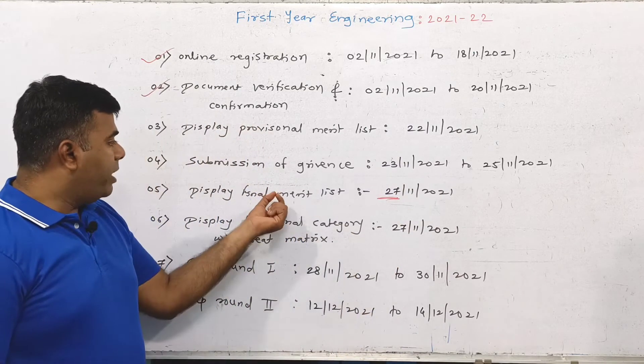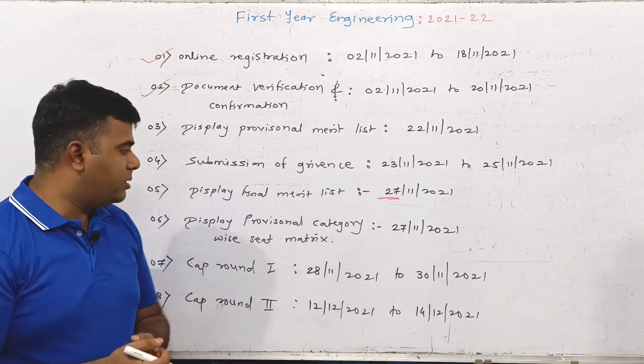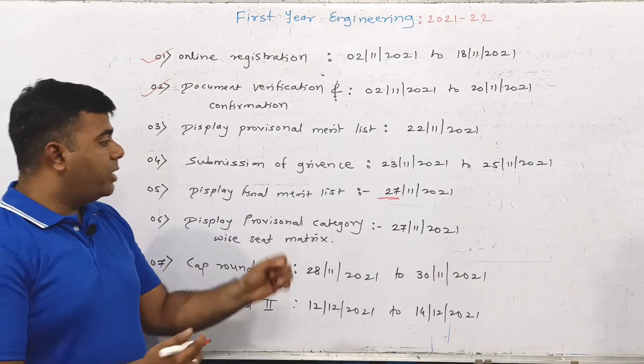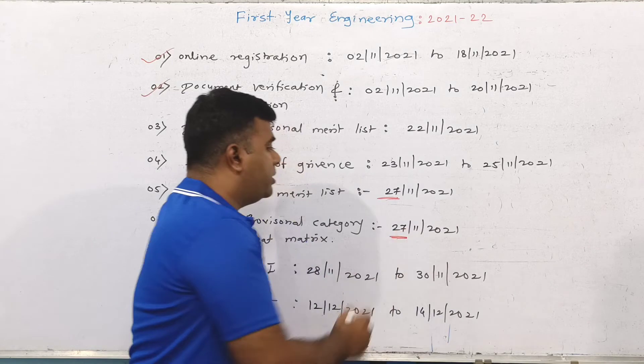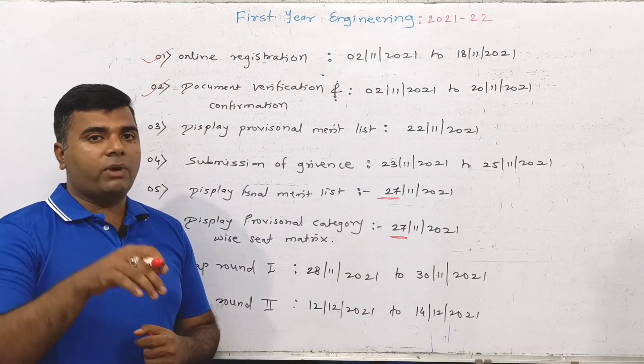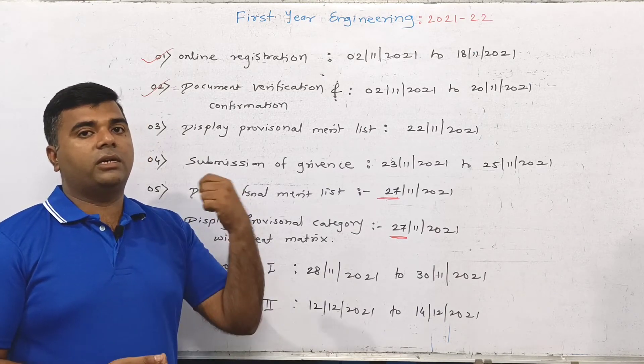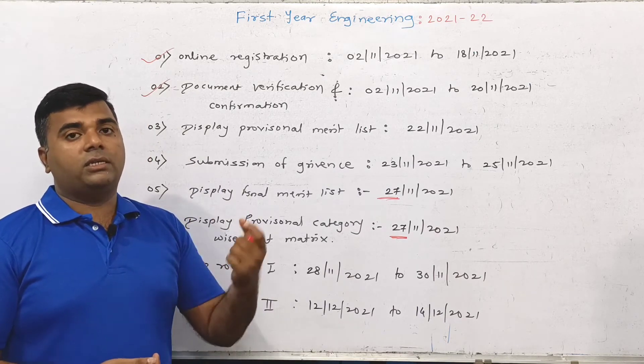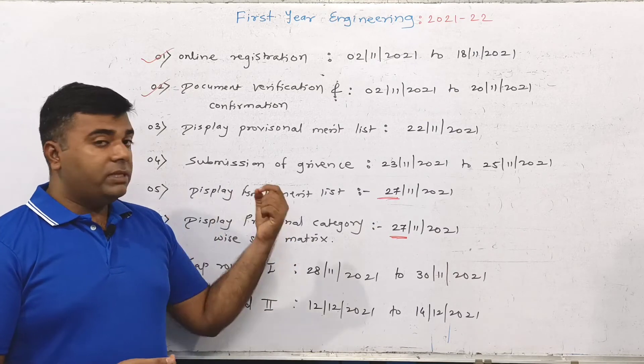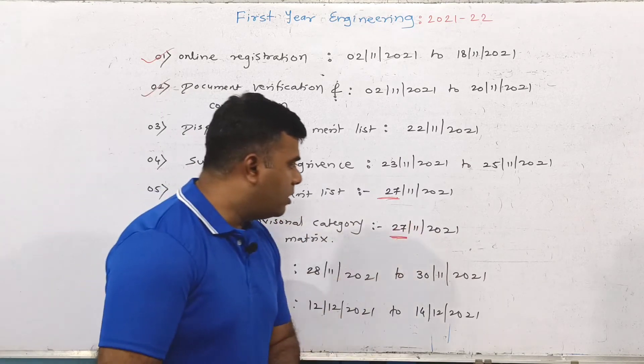The merit list is important. Then you can select and display the provisional category-wise seat matrix. This shows seat availability in colleges on 27th November 2021.